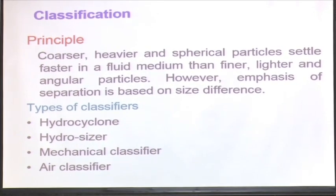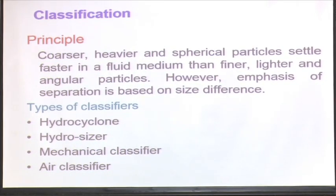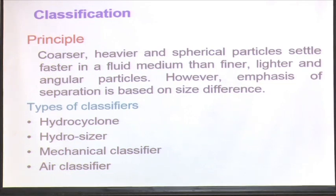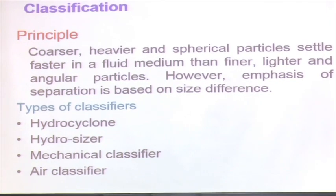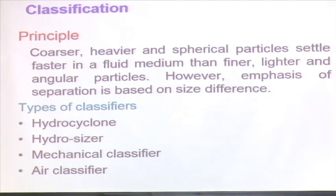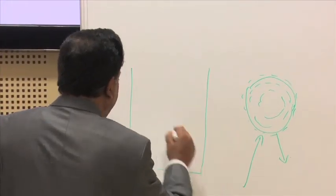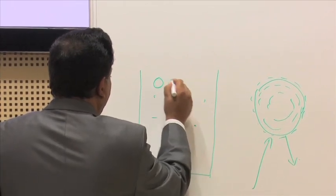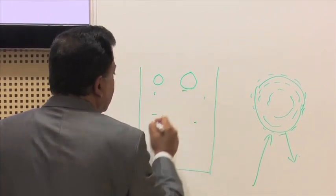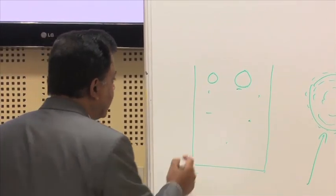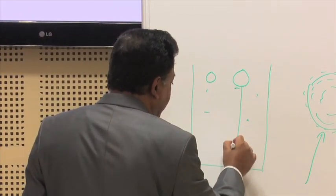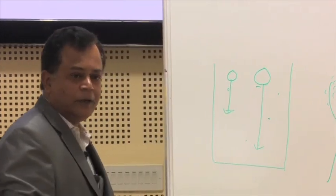A simple example: suppose I have a container full of water and I drop 2 particles of different sizes but the same density. After a delta-t time, the location of the 2 particles will be at different locations - this particle will be somewhere here, this particle will be somewhere here.